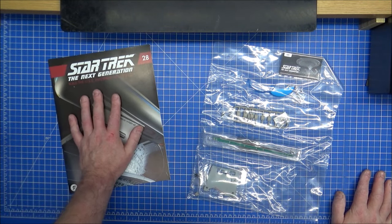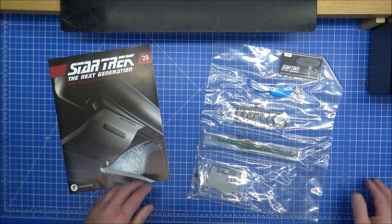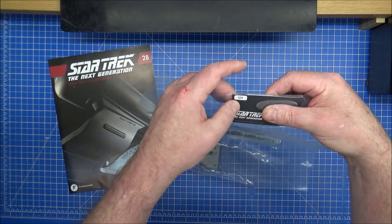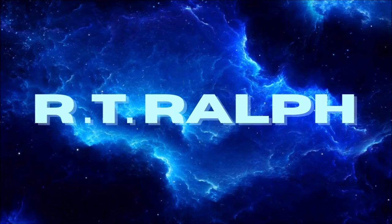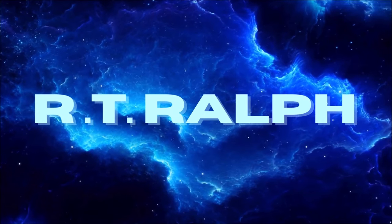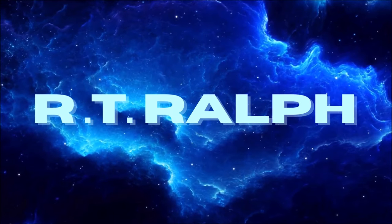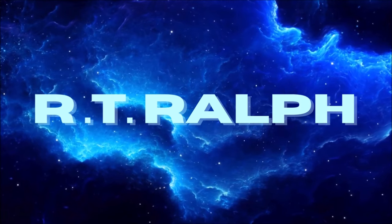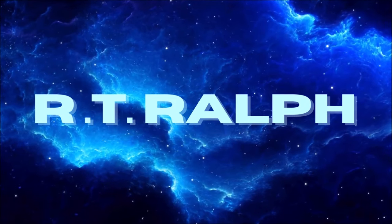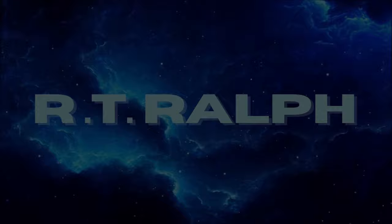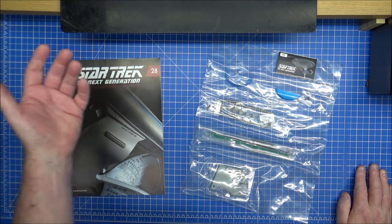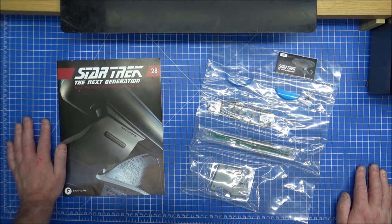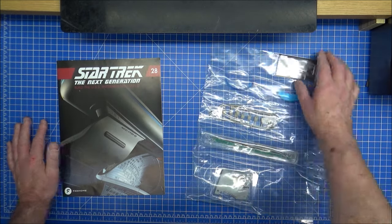It's Fanhome time. It's magazine number 28 on the Enterprise D build. We're up to 109 on the parts. Hi guys, Ralph here. So we're up to magazine 28 of the Fanhome build, the Enterprise D, the part bag 109.